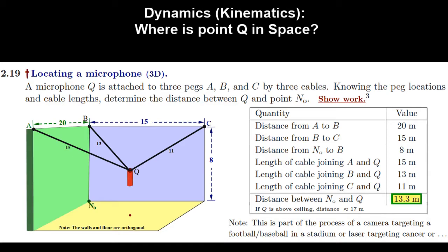A microphone Q is attached to three pegs A, B, and C by three cables. Knowing the peg locations and cable lengths, determine the distance between Q and point N0.